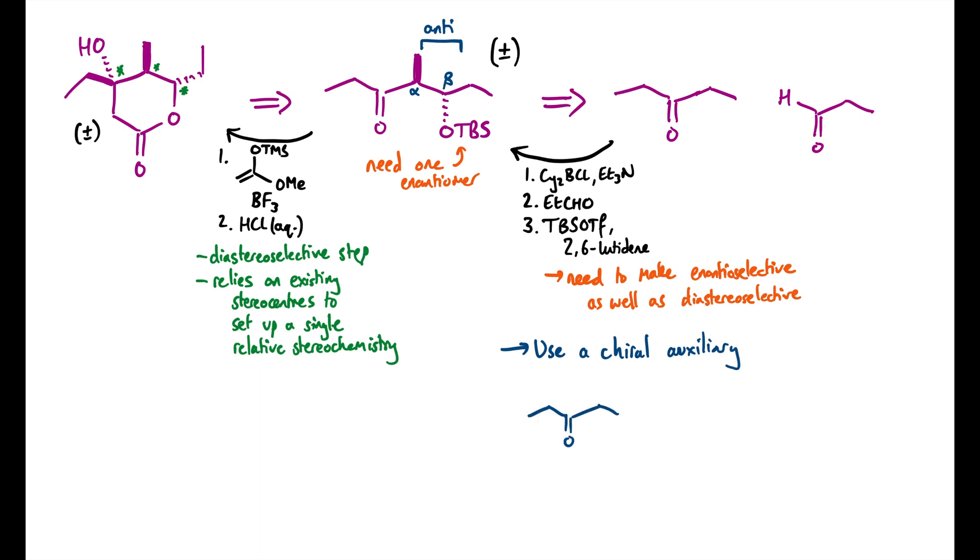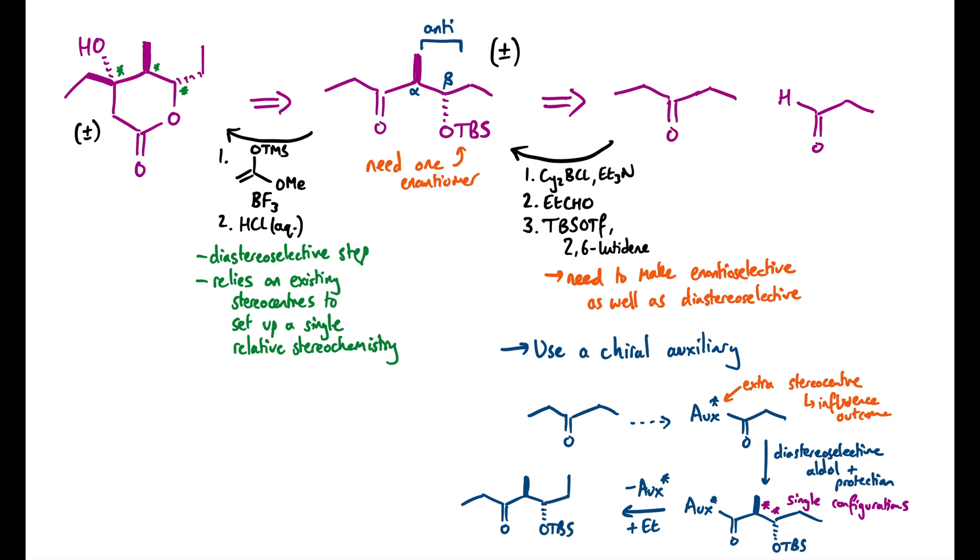The idea being that I'm going to modify my starting material to have a chiral auxiliary near the carbonyl, put it through a diastereoselective aldol reaction. But in this case, because there's an extra stereocenter, it will influence the outcome, and it will set those stereocenters in the product as one configuration. And then provided we can find some way of removing the auxiliary and adding on an ethyl group, we're job done. The two stereocenters in purple here have been set as one configuration, and so this final product will be as one enantiomer.